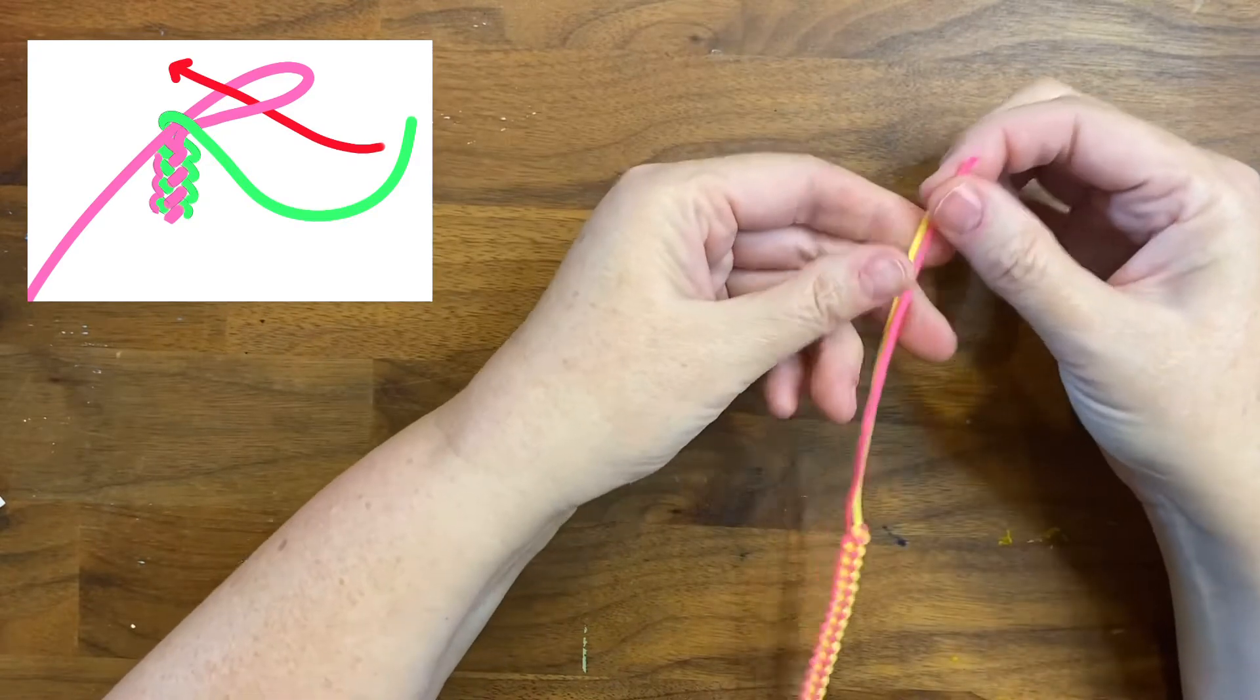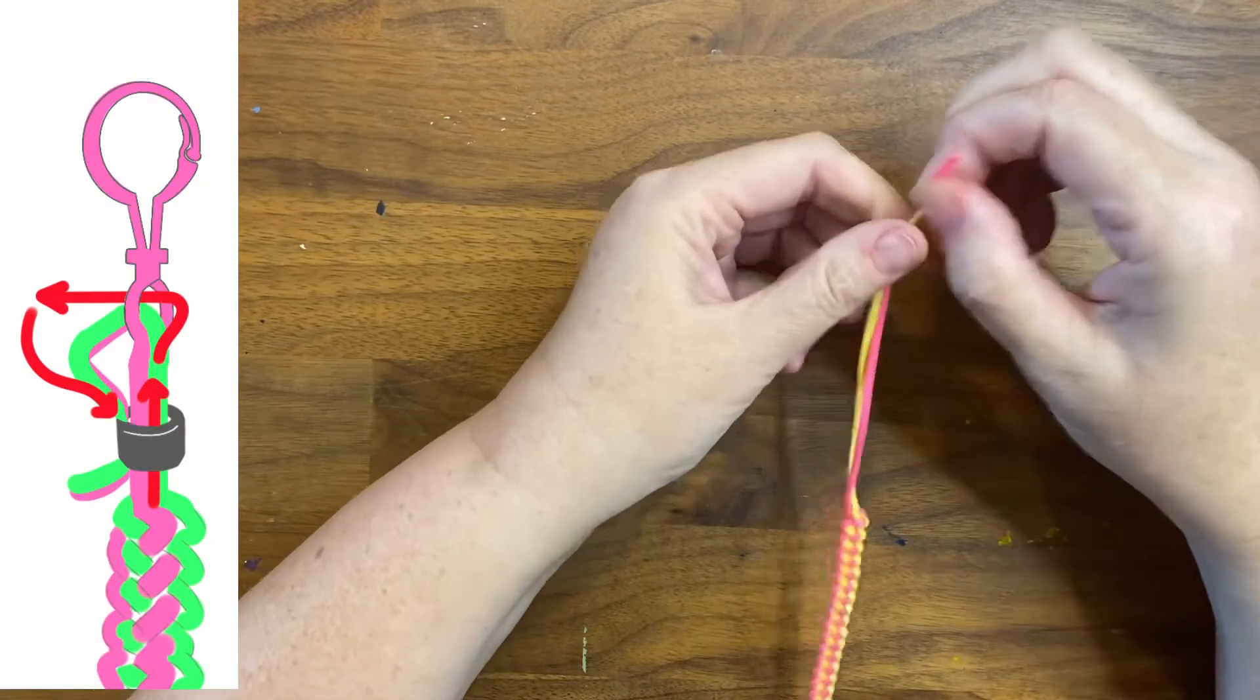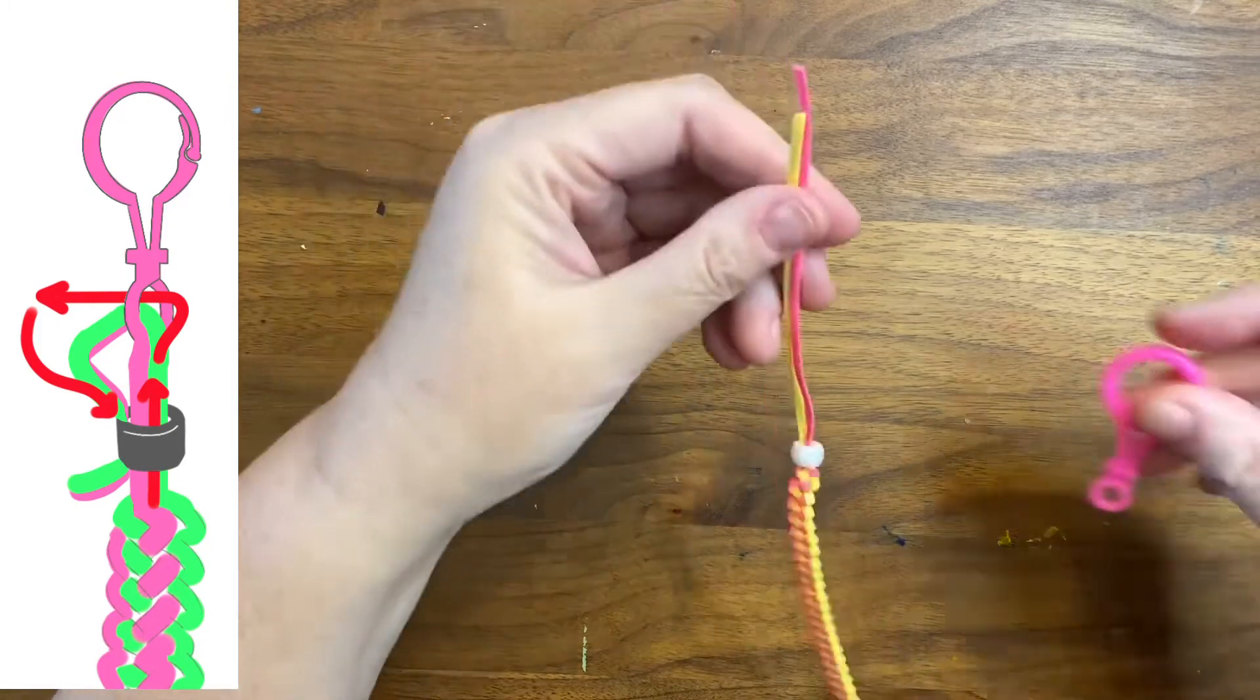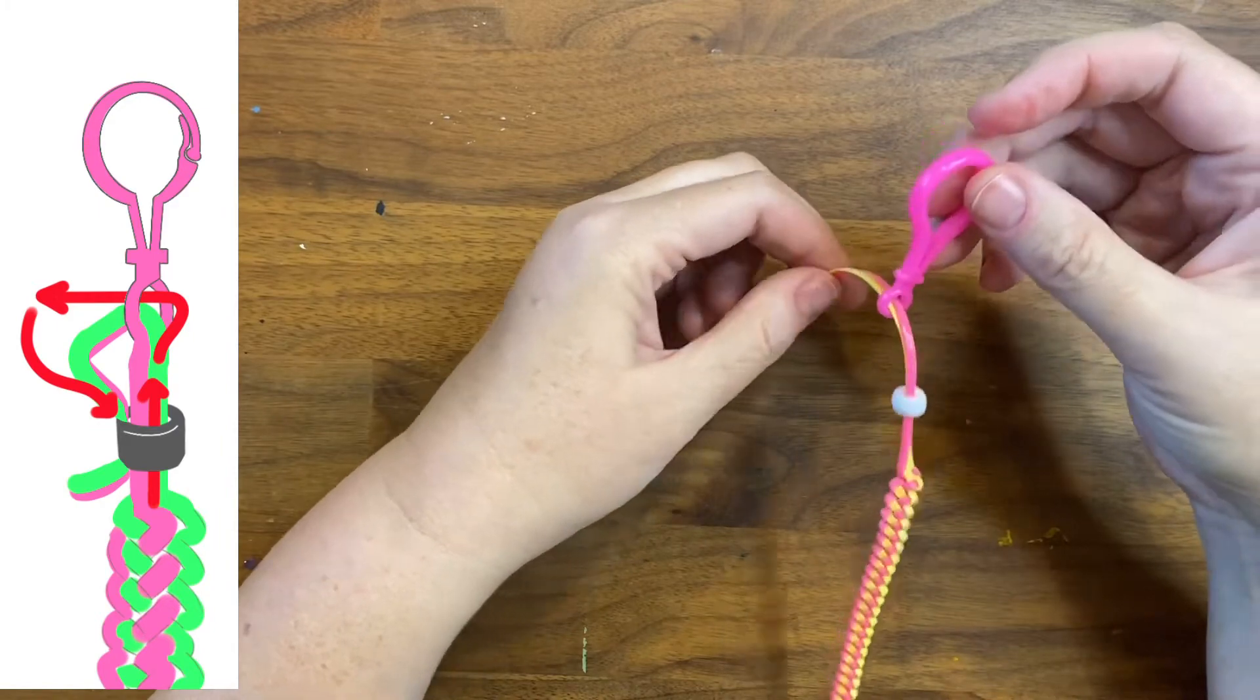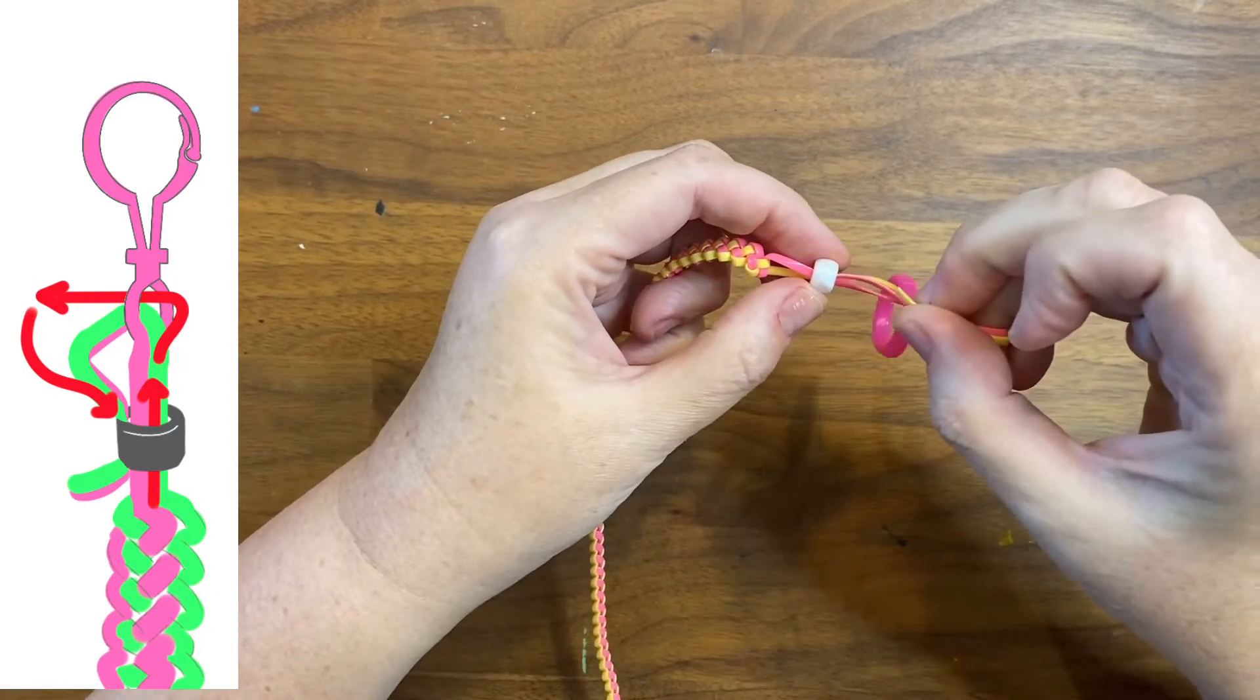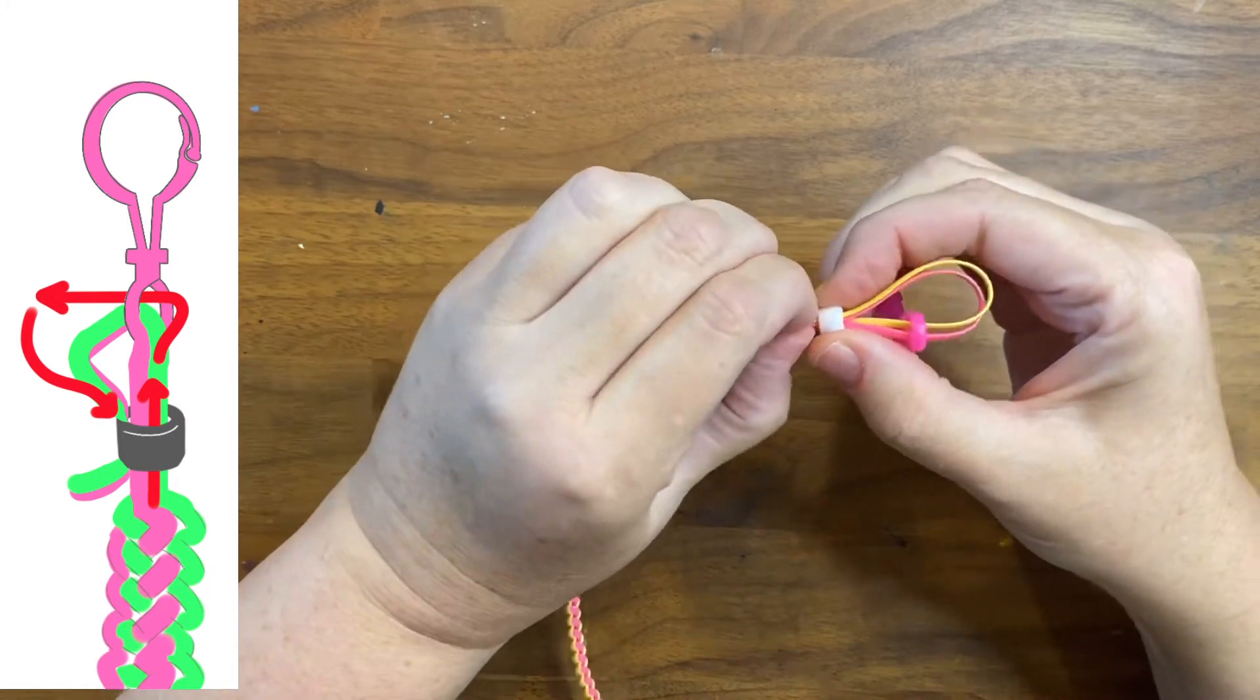From here you'll match up your ends. They should be close in length and then feed the tails through a bead again, just like we did at the beginning and also through the hole in your clasp or your clip. And you'll want to make sure your clips are facing the same way as the first clip if that makes sense, and then double back through the bead to secure the clasp. And again you'll want to just tighten that up.